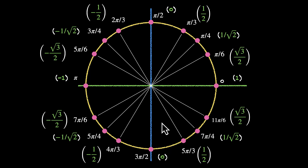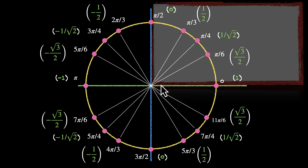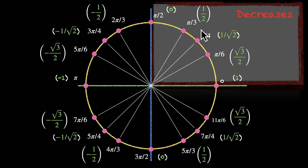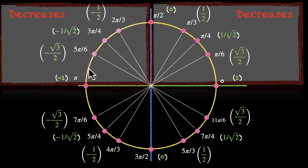Let's look at these things one quadrant at a time. In the first quadrant, the x-coordinate decreases — we are moving from 1 to root 3 by 2, to 1 by root 2, to half, and then to 0. What happens in the next quadrant? We move from 0 to minus 1, so we are further decreasing. The value of cos x decreases from 1 to 0 and then further decreases from 0 to minus 1.